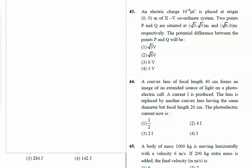Question number 43. An electric charge 10 to the power minus 6 microcoulomb is placed at the origin (0,0) in an XY coordinate system. Two points P and Q are situated at specific distances.